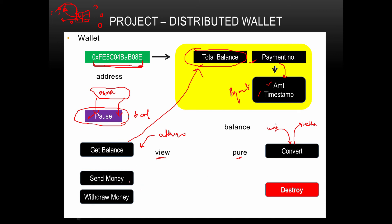Then you have two main functions: sendMoney and withdrawMoney. Anybody can call sendMoney and send some money to the smart contract, and it will be mapped to their address showing how much money they have sent. In this function, you increment the total balance by the amount sent, add one to the existing payment number to create a new payment number, and map that new payment number to the latest payment, including its amount and the timestamp.